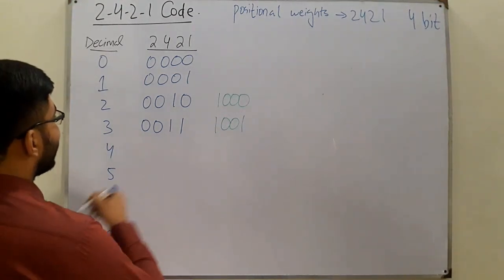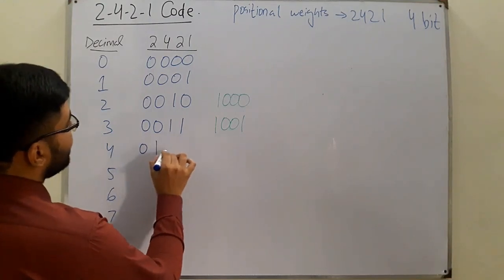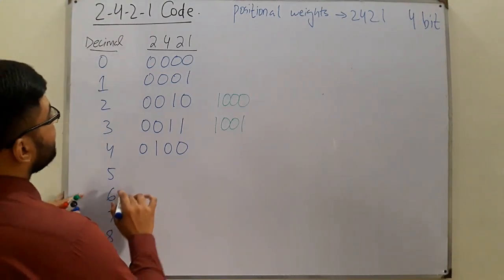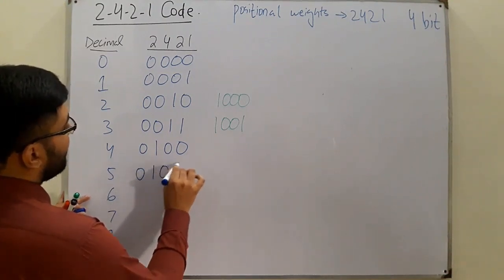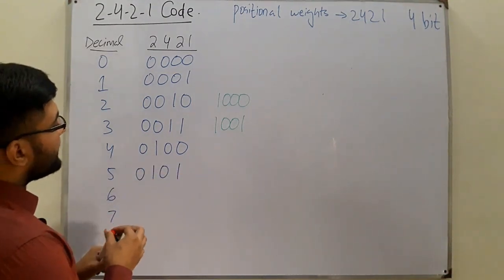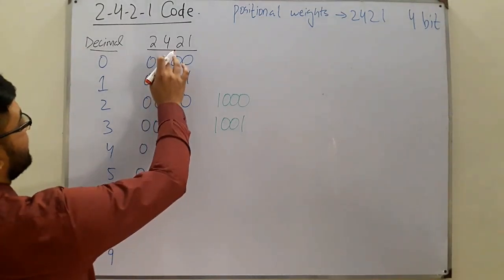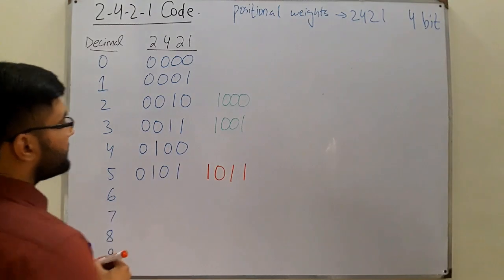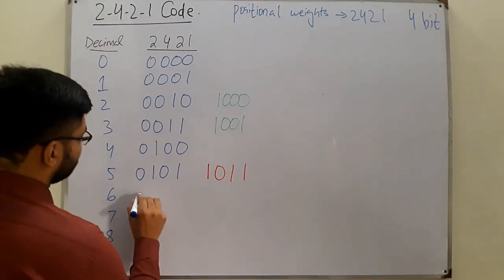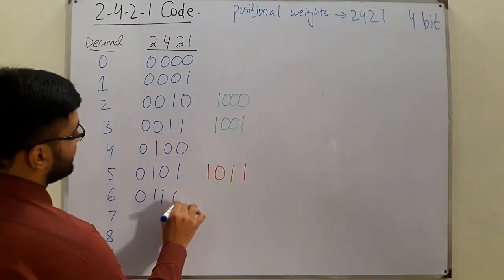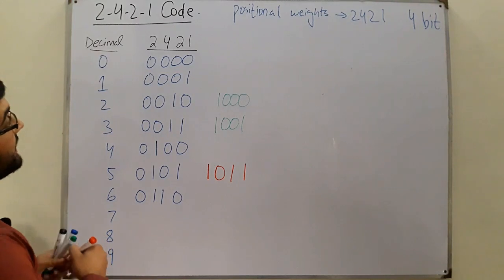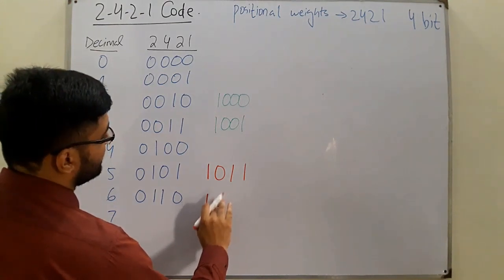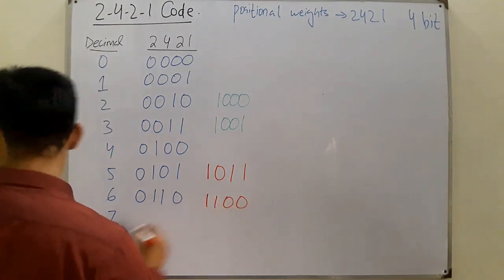For four, we have 0100. For five, we can have 0101, and similarly we can represent it as a sum of the two twos and a one, so you can write 1011 with the four position low. For six, you can have 0110, or you can also write it as 1100, representing it as a sum of the two higher-weight positions.